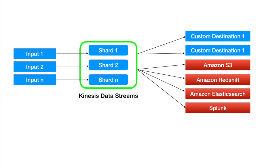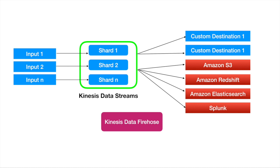Now here's the key point: Kinesis Data Firehose can deliver data directly to only four available destinations — Amazon S3, Amazon Redshift, Amazon Elasticsearch, and Splunk. What's interesting is that Kinesis Data Firehose can be used as a consumer of Kinesis Data Streams. So after Kinesis Data Streams stores some data, we can use Kinesis Data Firehose to read data directly out of the stream and send it to those four destinations.